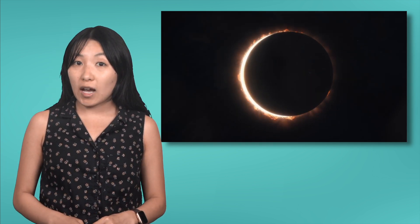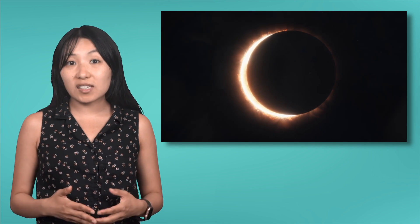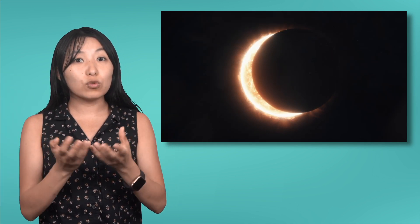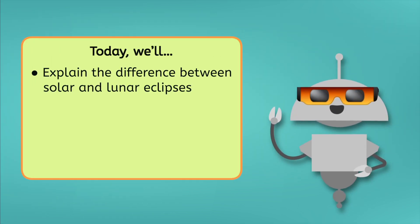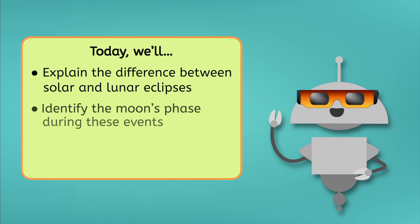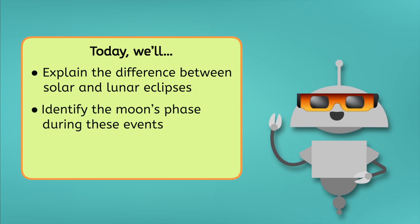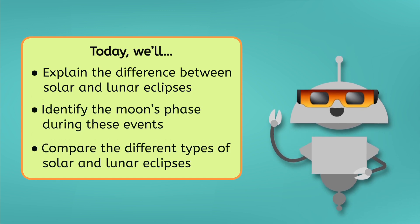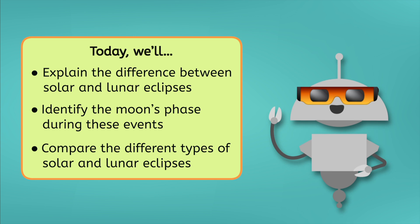These alignments are rare, but when they do happen, they change the way we see the sky, turning day into night or transforming the moon into a glowing red ball. Today, we'll explain the difference between solar and lunar eclipses, identify the moon's phase during these events, and compare the different types of solar and lunar eclipses. Let's get started.